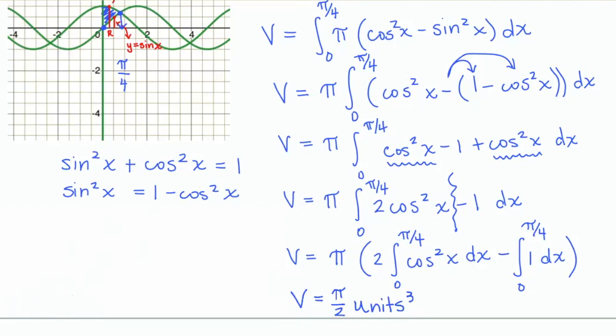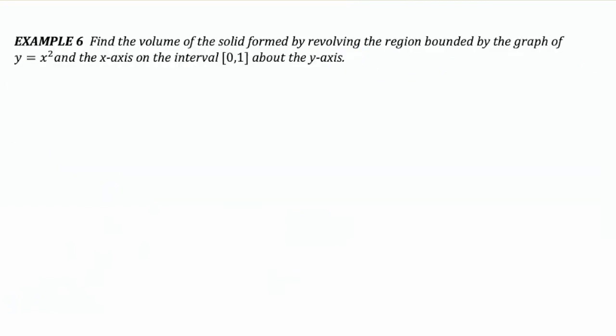Okay, again, decimal approximations are fine. Last up is example 6, which is from your book. We're going to find the volume of the solid form by revolving the region bounded by the graph of y equals x squared and the x axis on the interval 0 to 1 about the y axis.